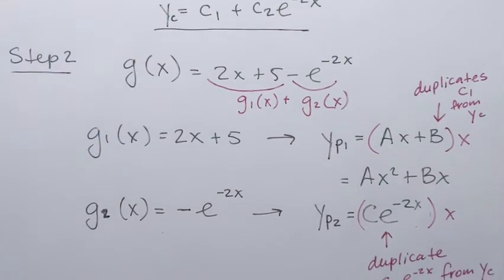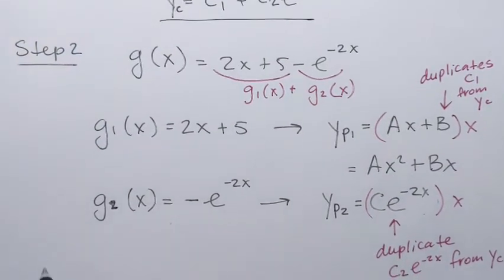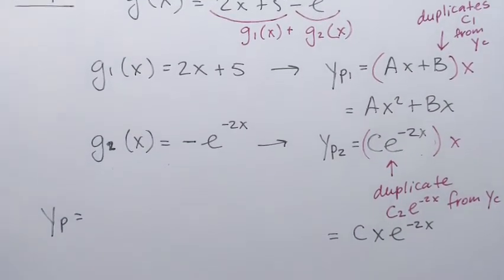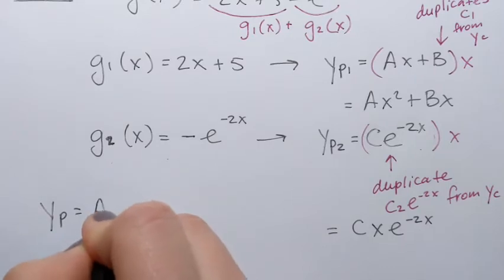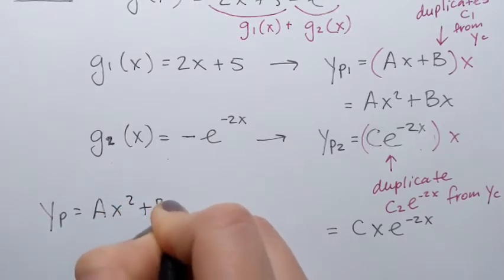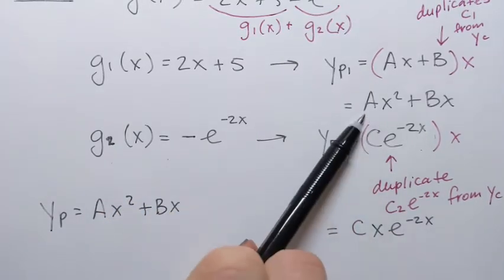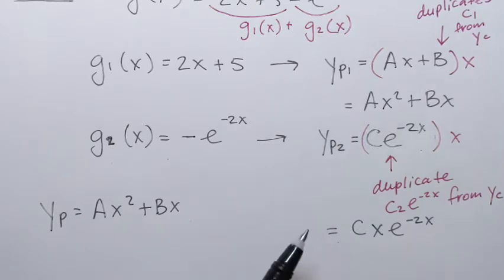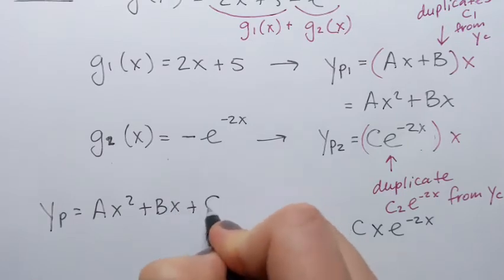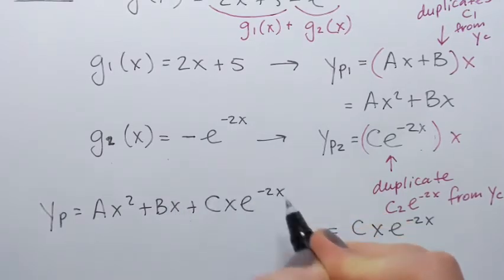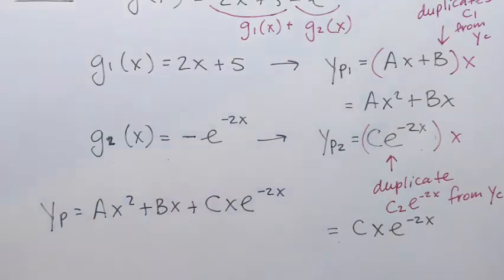Putting those two pieces together, the particular solution is yp equals ax squared plus bx plus cx e to the power of negative 2x.